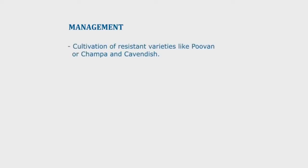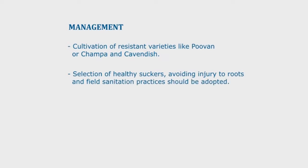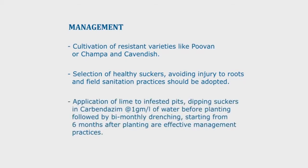Management of Panama disease includes cultivation of resistant varieties like Puvan, Champa, and Cavendish. Selection of healthy suckers. Avoiding injury to roots and adopting field sanitation practices. Application of lime to infested pits. Dipping suckers in Carbendazim at 1 gram per liter of water before planting, followed by bi-monthly drenching starting from six months after planting are effective management practices.